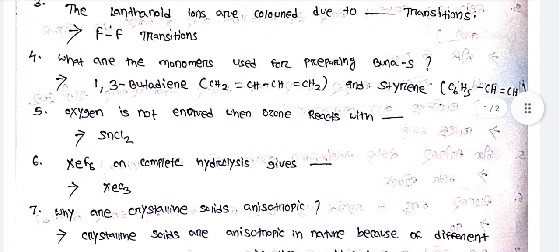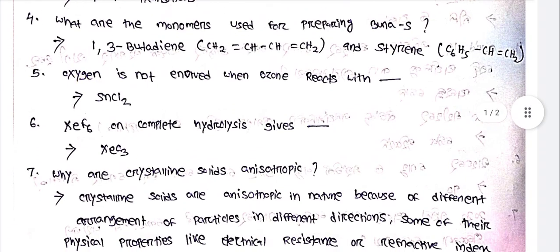What are the monomers used for preparing Buna-S? This is very important. The monomers are 1,3-butadiene (CH₂=CH-CH=CH₂) and styrene.